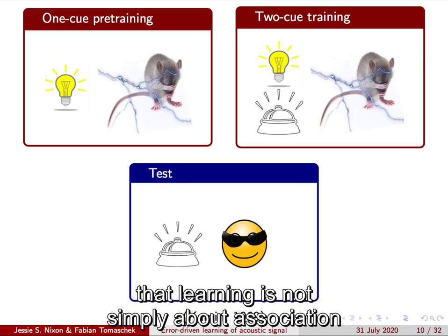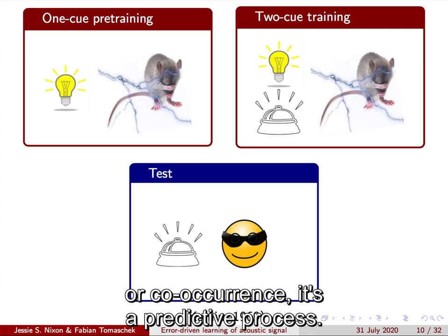This experiment demonstrates that learning is not simply about association or co-occurrence. It's a predictive process.